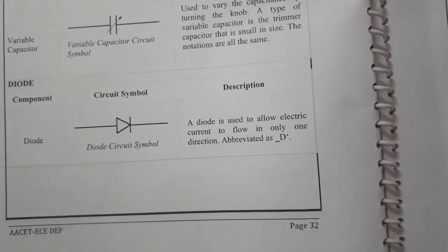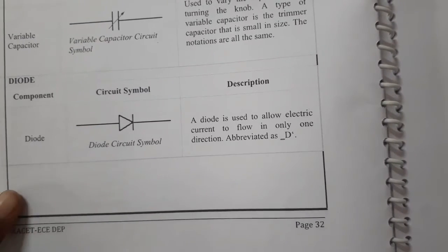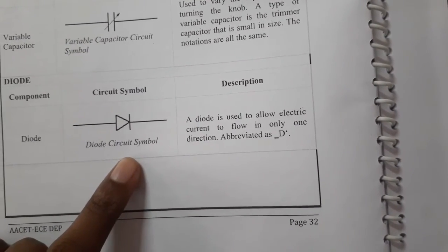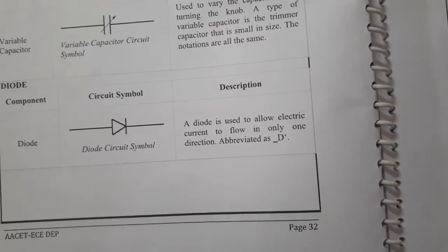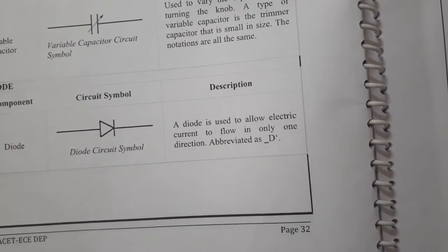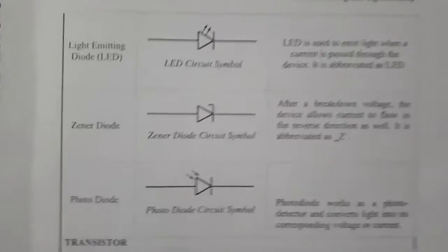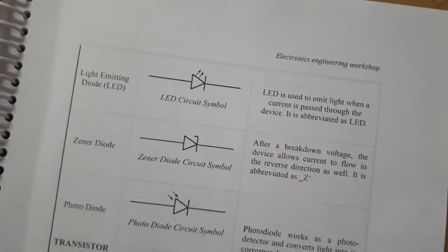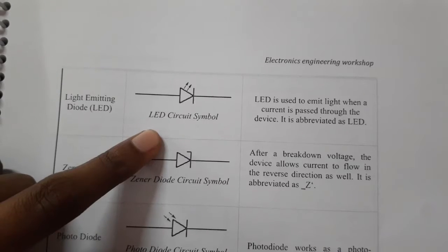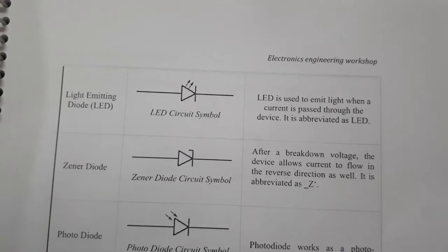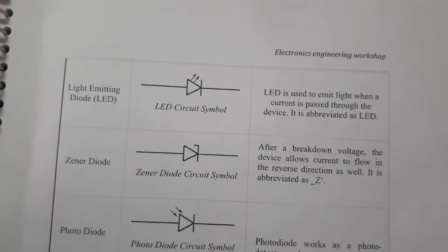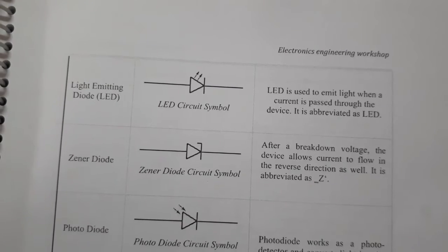Next is the diode — this is the circuit symbol. A diode allows electric current to flow in one direction only. Next is the light emitting diode (LED) — this is the symbol. An LED emits light when current is passed through the device.